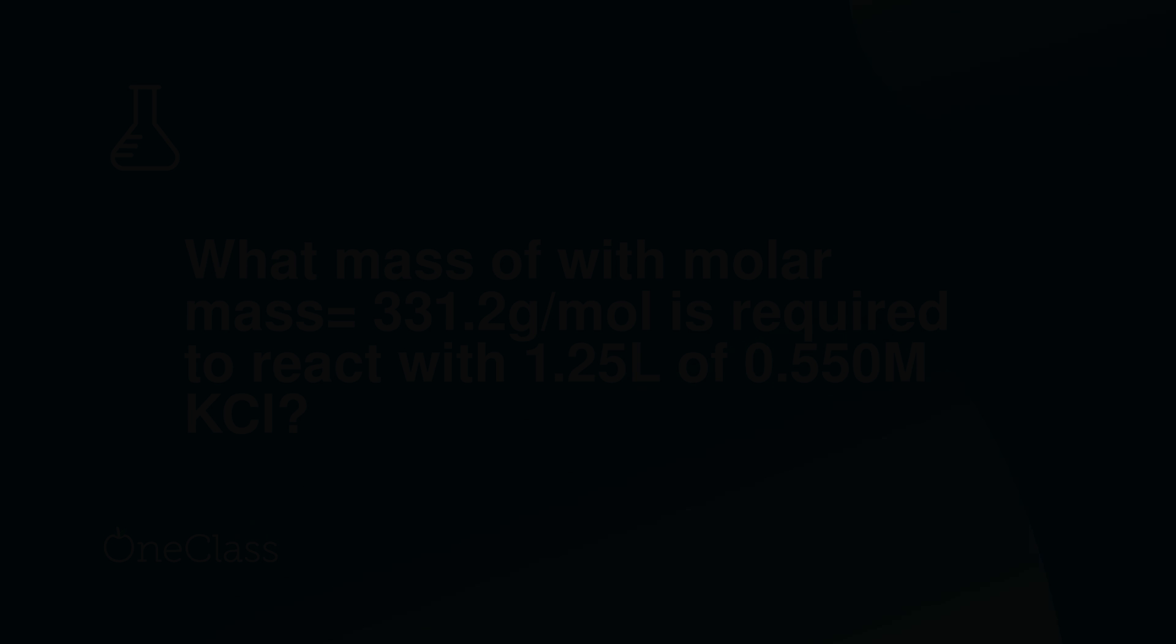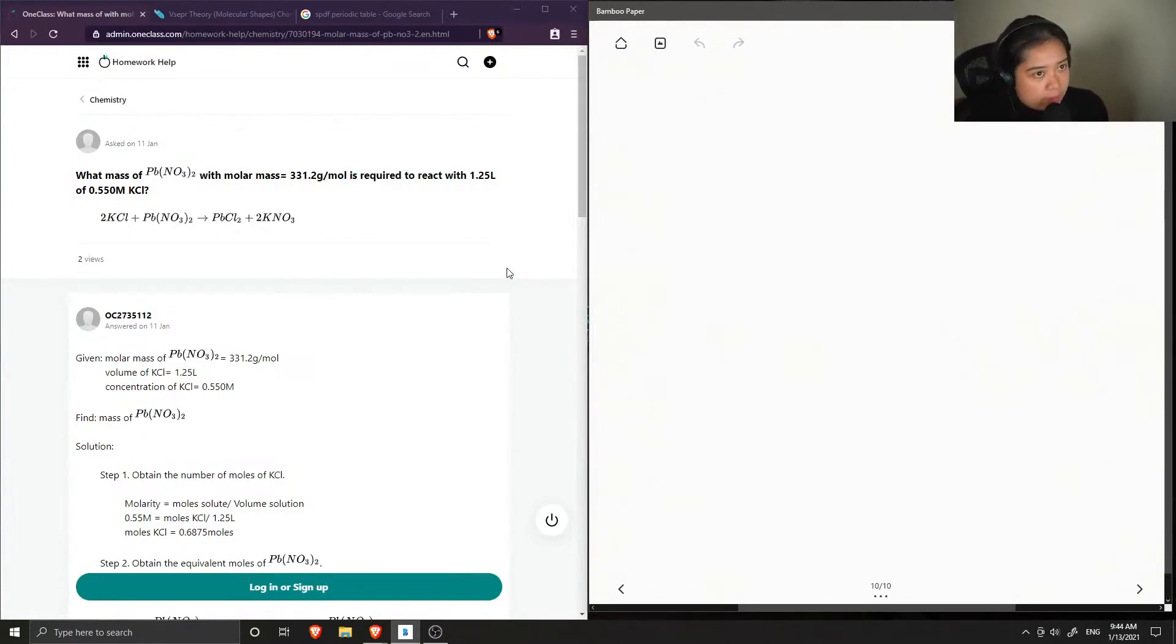For one more quick question. What mass of lead nitrate with a molar mass of 331.2 grams per mole is required to react with 1.25 liters of 0.55 moles per liter solution of potassium chloride?